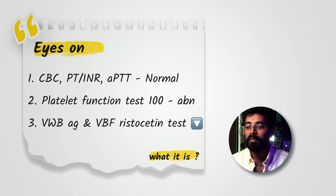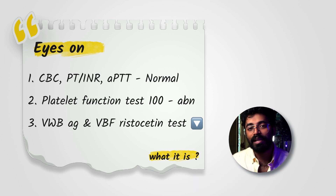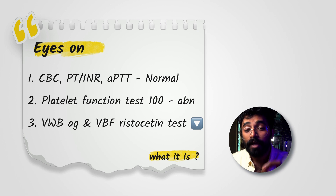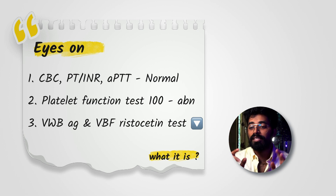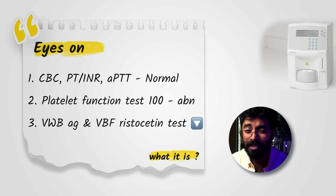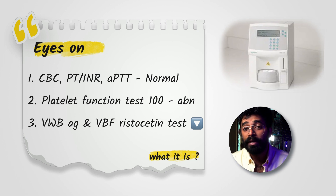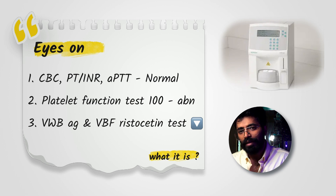Two platelet tests were done. The first is the Platelet Function Analyzer 100 (PFA-100) — a newer test used for platelet disorders and bleeding disorders. It is particularly useful in assessing von Willebrand disease types 2A, 2B, and 3. Remember this: the PFA-100 test is used specifically for von Willebrand disease types 2A, 2B, and 3.